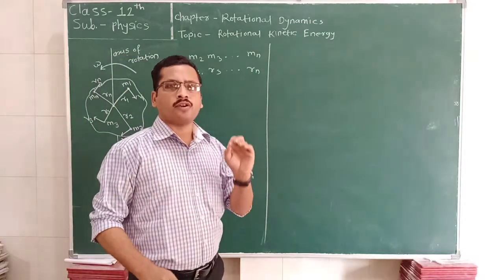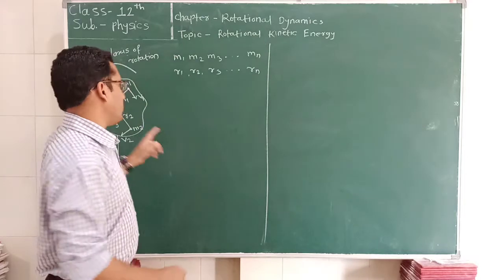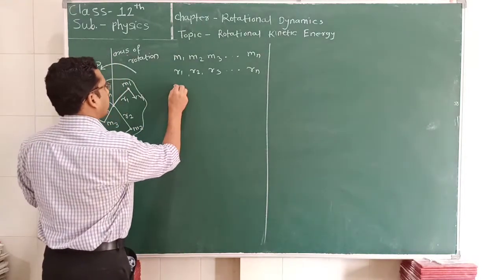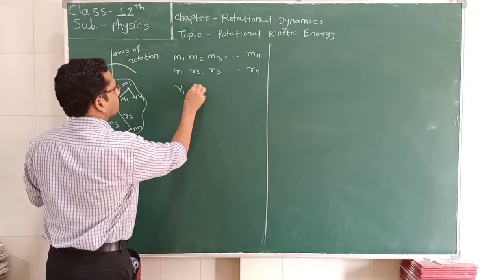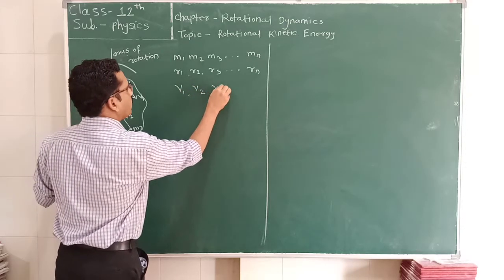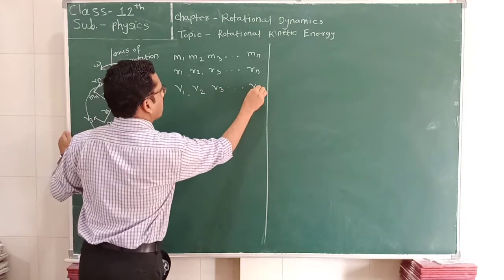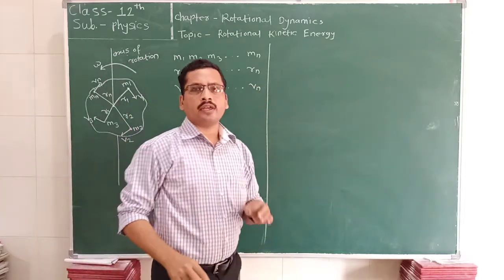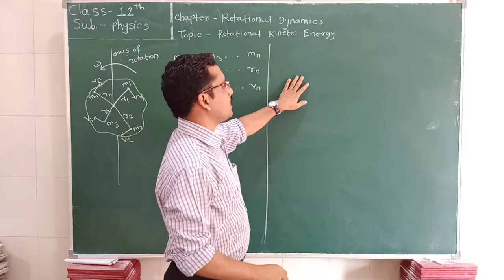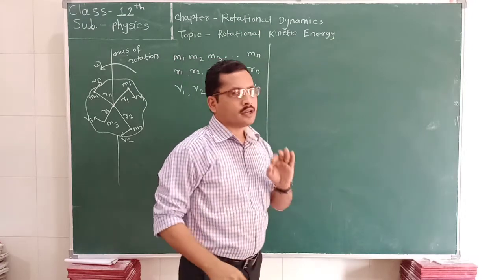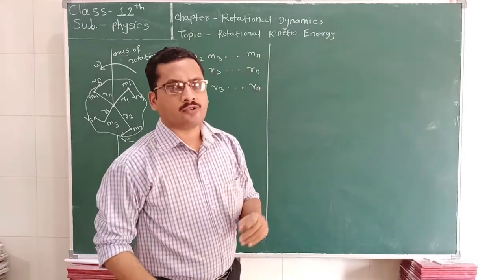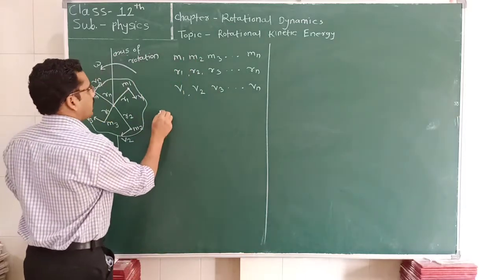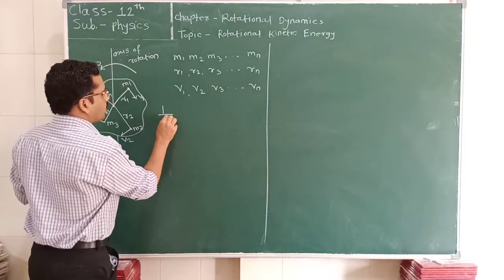Therefore, in each case the velocity is also different. We can write the linear velocities as V1, V2, V3 up to Vn. To calculate the rotational kinetic energy, we start from the linear kinetic energy. The formula for linear kinetic energy is equal to ½mv².